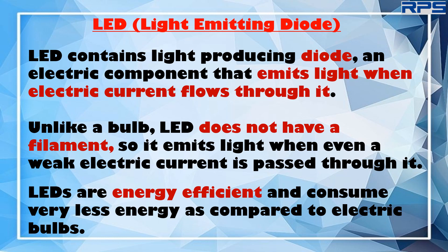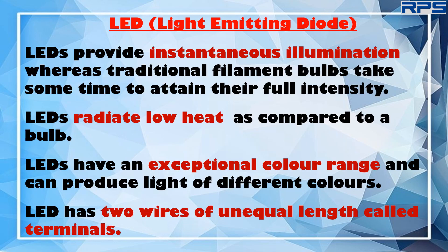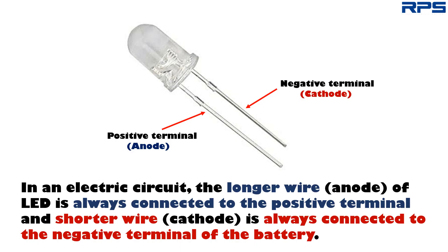LEDs are energy efficient and consume very less energy compared to electric bulbs. They provide instantaneous illumination, whereas traditional filament bulbs take some time to attain their full intensity. LEDs radiate low heat compared to a bulb and have an exceptional color range, producing light of different colors. An LED has two wires of unequal length called terminals. In an electric circuit, the longer wire is always connected to the positive terminal and the shorter wire is always connected to the negative terminal of the battery.